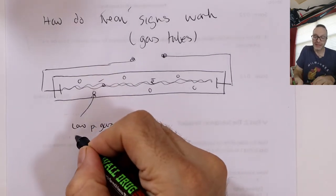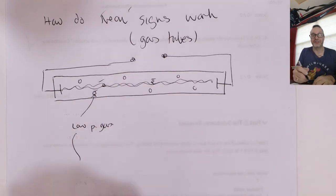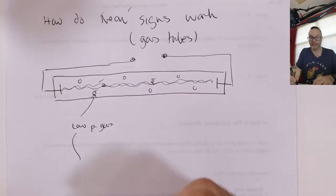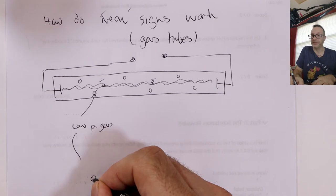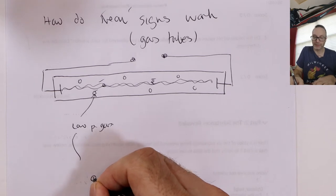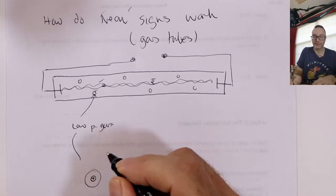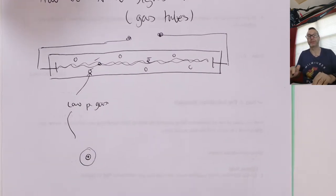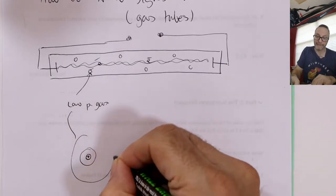So imagine an atom that's just been hit by an electron. If we think about any atom, there's a positive nucleus, and as we saw in class, there are these shells or layers of electrons.